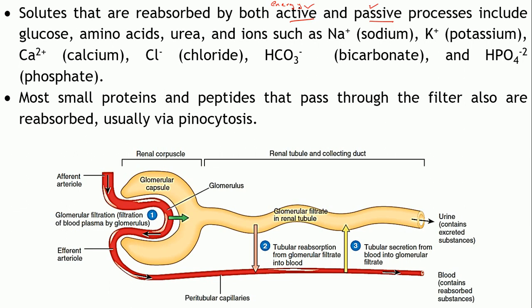A specific transporter may be available for a specific type of solute. Substances reabsorbed include glucose, amino acids, urea, and several ions such as sodium, potassium, calcium, chloride, bicarbonate, and phosphate ions. These ionic components are filtered out because they are very small, and they must be reabsorbed — if all these ions were lost from the body, the electrolyte balance would be disrupted since the body requires them in specific amounts.